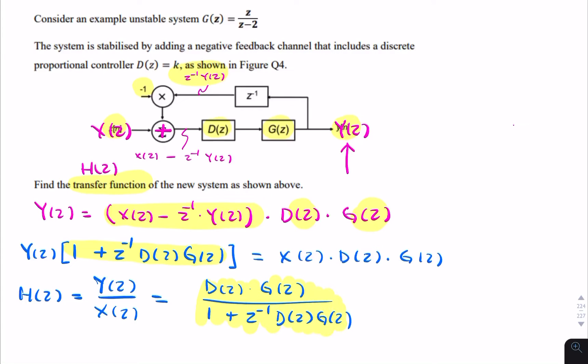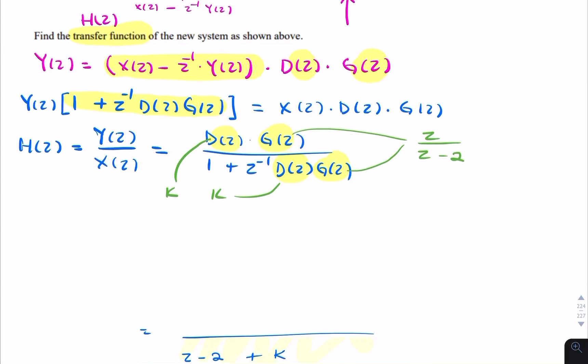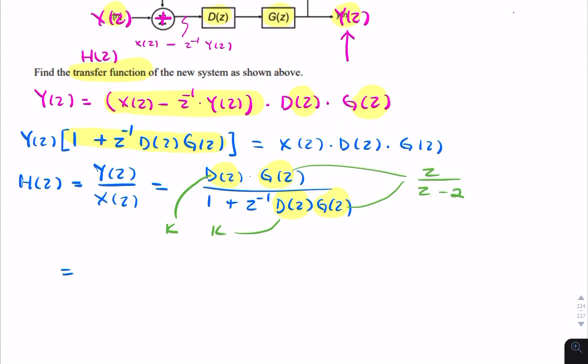But in this particular question, we're given d and g. So we can replace d with the value we're given in the question, which is k. So that's k, and that's k, and g we can replace with z over z minus 2. So my transfer function simplifies to kz over z minus 2 divided by 1 plus z to the minus 1 times kz over z minus 2.